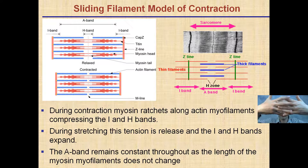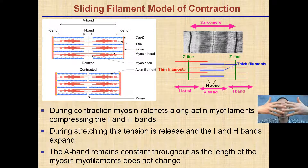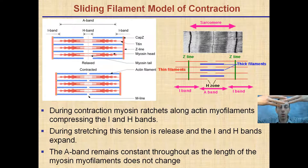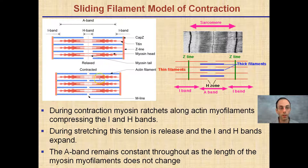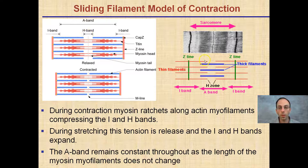During stretching, tension is released and the I and H bands expand. In the relaxed phase, the muscle is very spaced out. In the contracted phase, the filaments slide past one another and pull closer together. The A band remains constant throughout — the length of the myosin filaments does not change. Comparing our relaxed and contracted models, we notice that the length of actin didn't change and the length of myosin didn't change, but the H band shrank considerably because the filaments slid together.